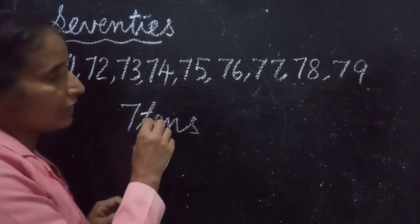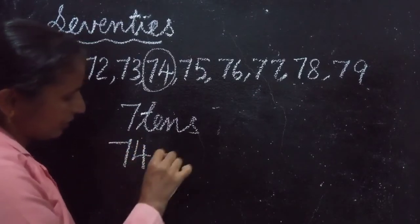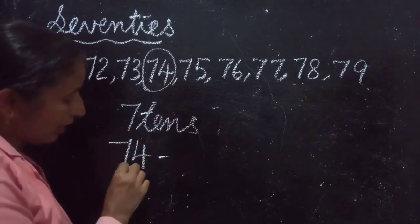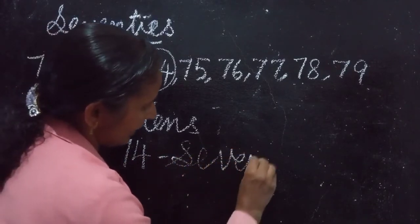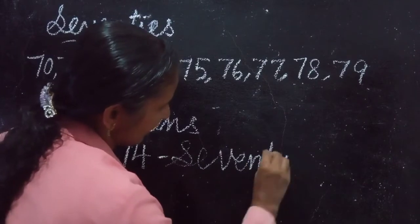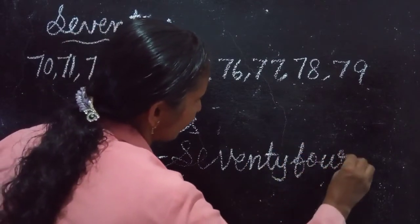Number name you already learned. But you can say the number name of 74. Seventy-four. S-E-V-E-N-T-Y 74. F-O-U-R 4.